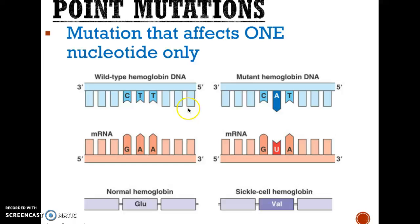A point mutation is a mutation that affects only one nucleotide. So in this case, if we have CTA and we only change one of those nucleotides to CAT, notice that the only one that has changed is the T for the A — that is what we call a point mutation.